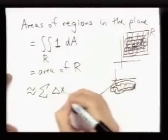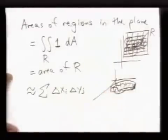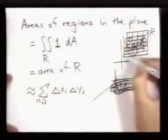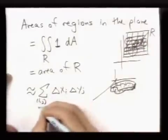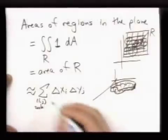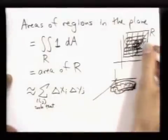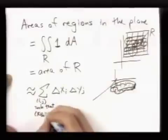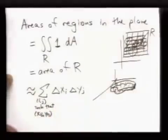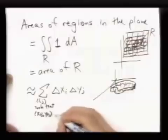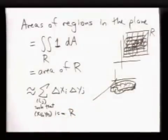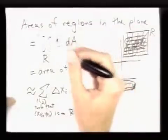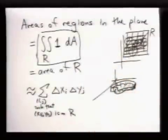So this would be something like delta xi, delta yj, but we'd only care about rectangles over i and j that actually sit inside. So I'd only care about ij such that maybe our sample point, sample point in one of the rectangles is inside the region. So that's a brief explanation of why finding areas of regions, it is just a matter of integrating, it's just a matter of computing a double integral of the function 1 over the region.